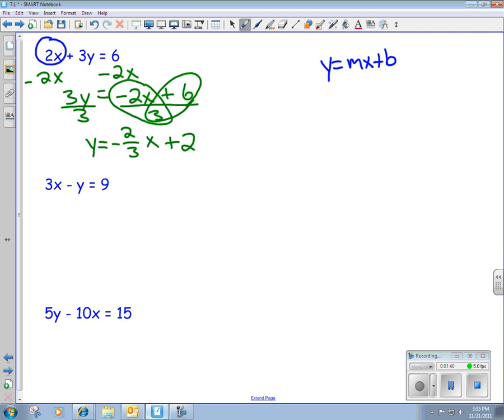So that gives us our equation, y equals negative 2 3rds x plus 2. That's in y equals mx plus b form. So we have m right here, b right there, so you can graph it.